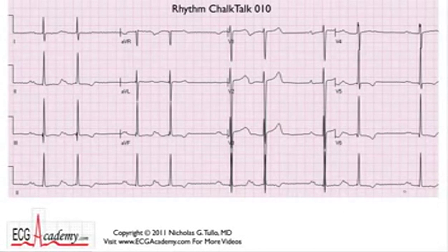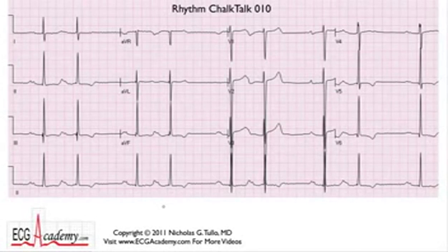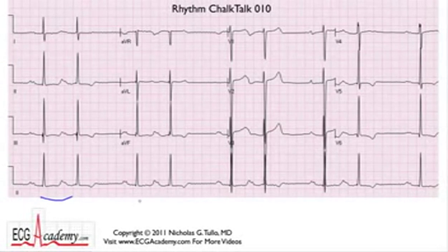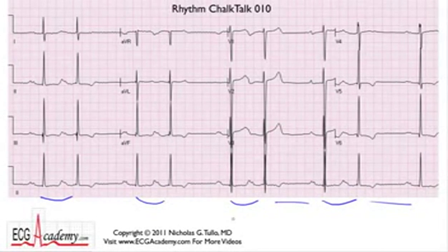Looking at the 12-lead, you can notice that there is an irregularity to it. But we talk about regularly irregular or irregularly irregular, and I think what you guys should be able to recognize is that there are groups of two — group beating with two beats followed by a pause and two beats followed by a pause.